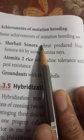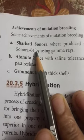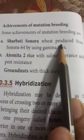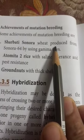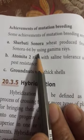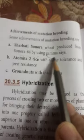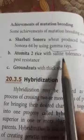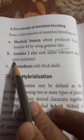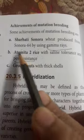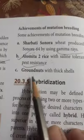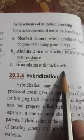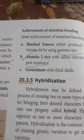Some achievements of mutation breeding: the first one is called Sarvati Sonora, a wheat variety produced from Sonora 64 by using gamma rays. Atometer 2 is a rice variety with saline tolerance and pest resistance, developed by mutation breeding. Groundnuts with thick shells have also been developed by mutation breeding.